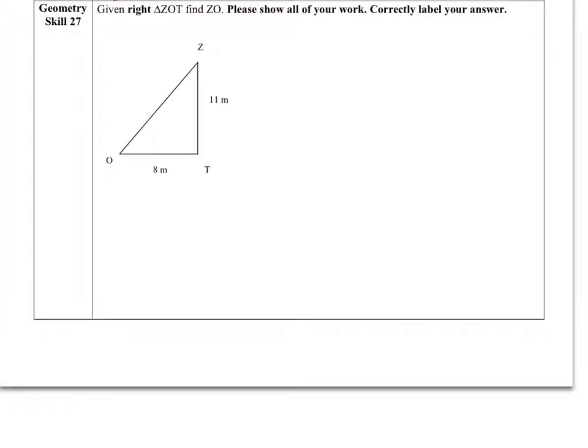To solve this problem, we will also be using Pythagorean's theorem, A squared plus B squared equals C squared. Now we will plug in the given information. A squared is length OT, which is 8 squared.